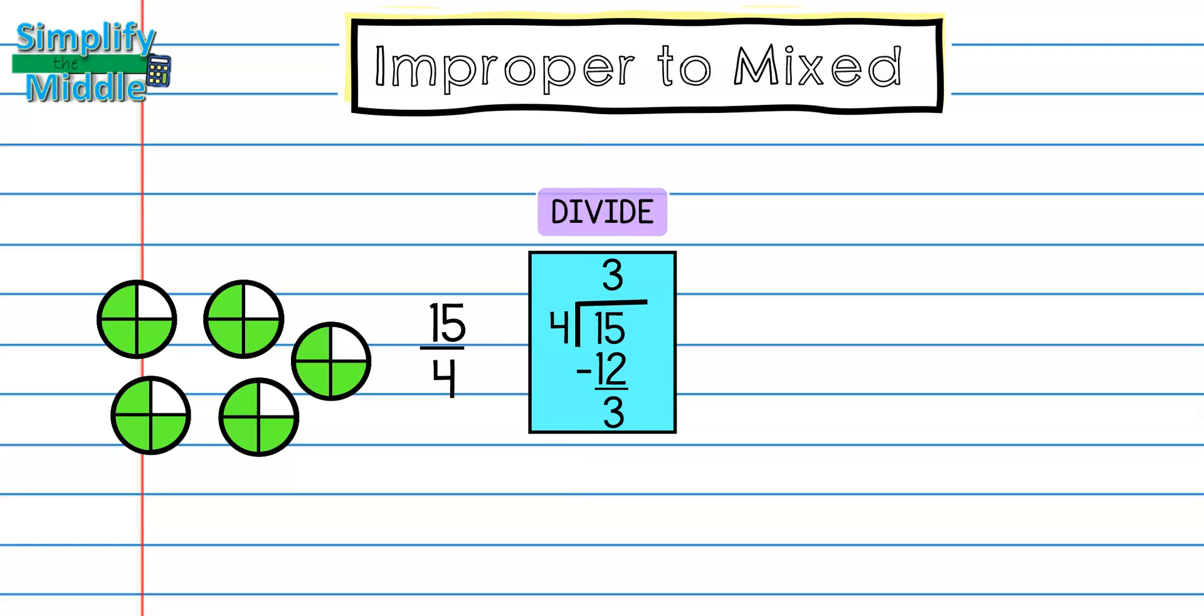Unlike dividing for decimals, I'm going to stop at my remainder, because remember this means that I was able to make three full boxes but I had three pieces left over. So my quotient in my division problem is going to represent my whole number, my remainder in my division problem is going to represent the numerator because that was what was left over.